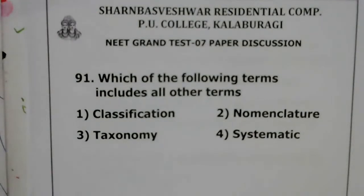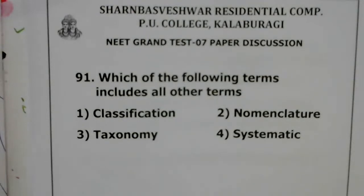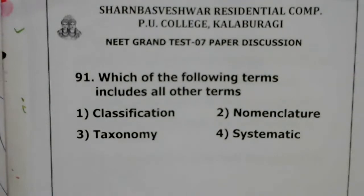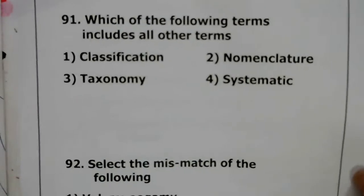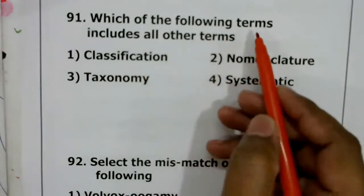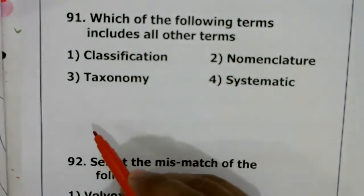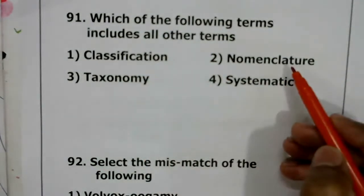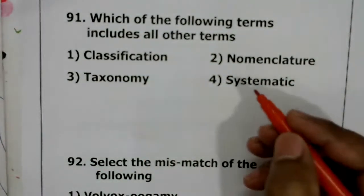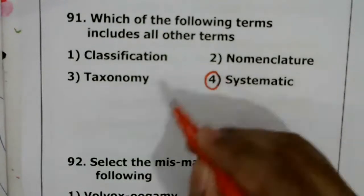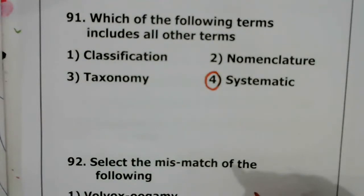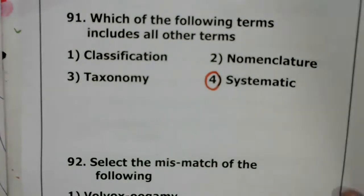Good afternoon students. In this session we will be discussing key answers of today's Grand Test number seven. Question 91: which of the following terms includes all other terms — classification, taxonomy, nomenclature, or systematics? The correct answer is systematics. Systematics is a branch of biology that deals with the study of identification, nomenclature, and classification of organisms. The correct answer is the fourth option.